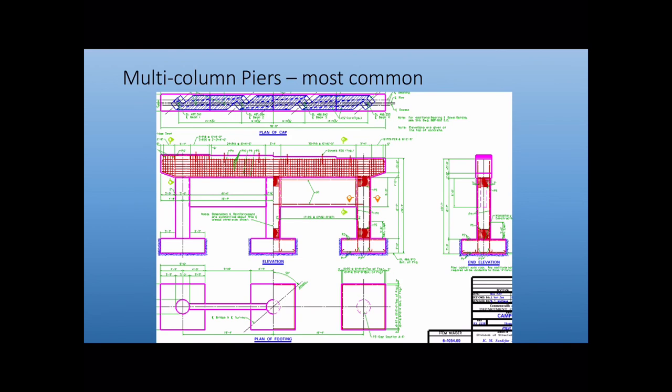Multi-column piers are our most common, reason being they don't require as much concrete and steel so therefore they're a cheaper pier. You can see they have individual columns, each have their individual footer. They go up into one connected pier cap. These can also have a web wall that connects them. The web wall could be structural or it could just be aesthetic.